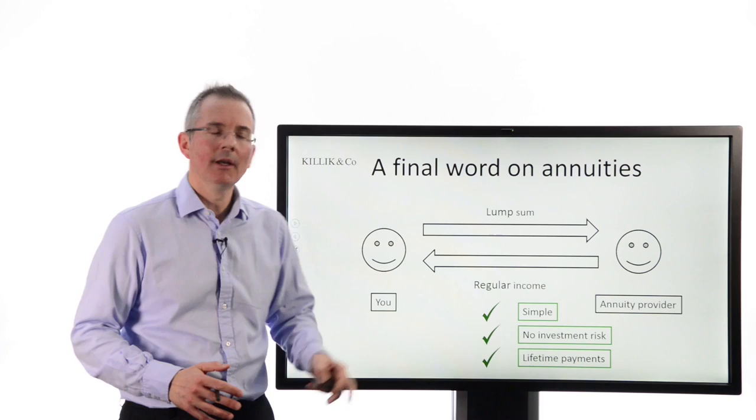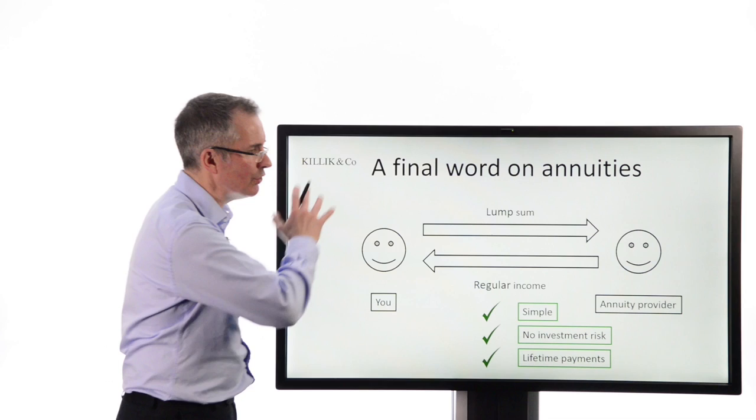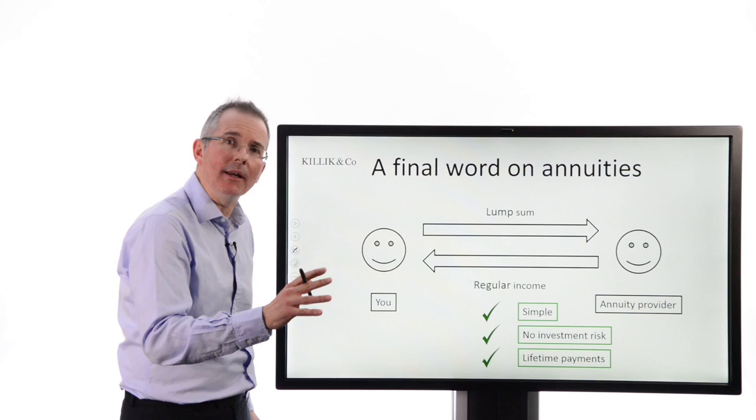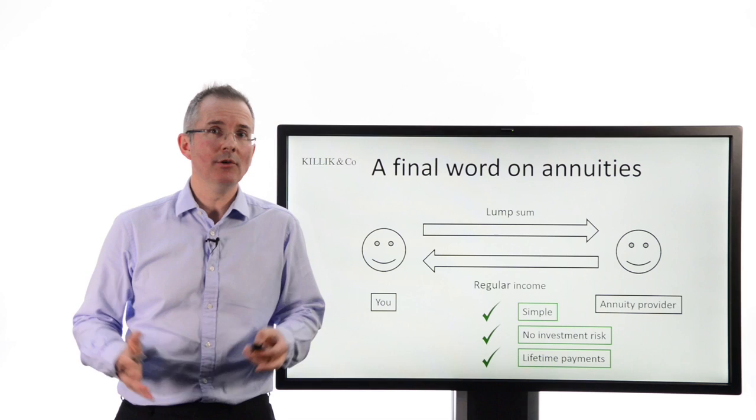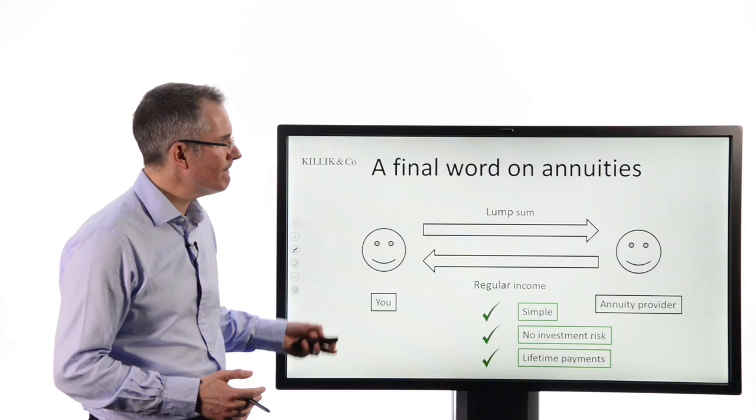So, you know, there are some benefits to a product that's got a right old hammering simply because annuity rates are relatively low. That's not the full picture. And if you shop around, use your open market option. Look around for the best rate and also factor in things that can improve that rate, which I won't go into here. There is scope to get not too bad a deal. Certainly not as bad as some of the headlines might have you believe.